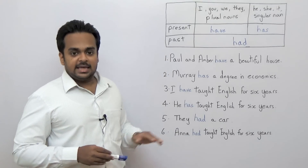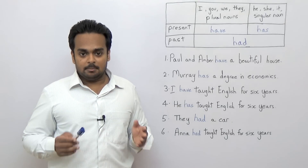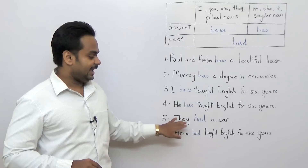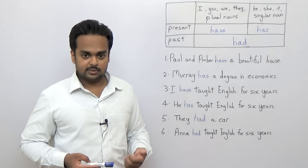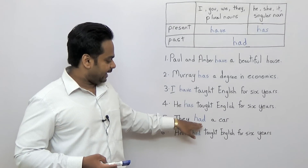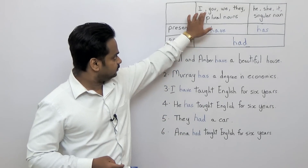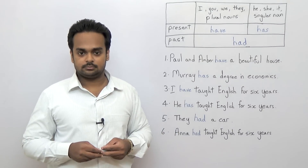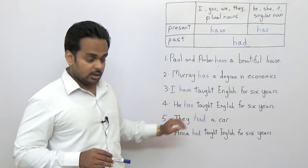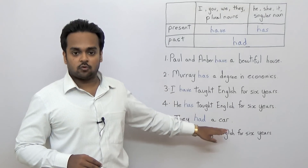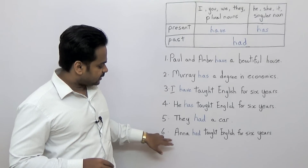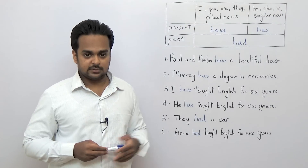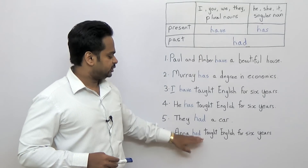Now let's talk about the past tense. If you have a sentence in the past tense, it's good news because no matter what subject you have, you will always use 'had.' So: 'they had a car' — that means they don't have a car now, they had one in the past. If the subject were I, it's still 'I had a car.' You had a car, he had a car, she had a car, Paul and Amber had a car, Murray had a car — it doesn't matter what subject, always 'had.' Same thing with 'Anna had taught English for six years' — this is in the past, so whatever subject, you still use 'had.'